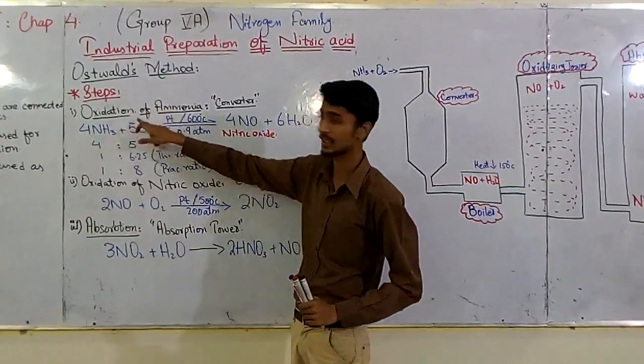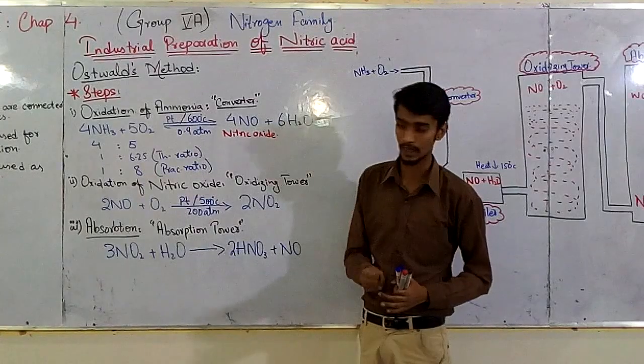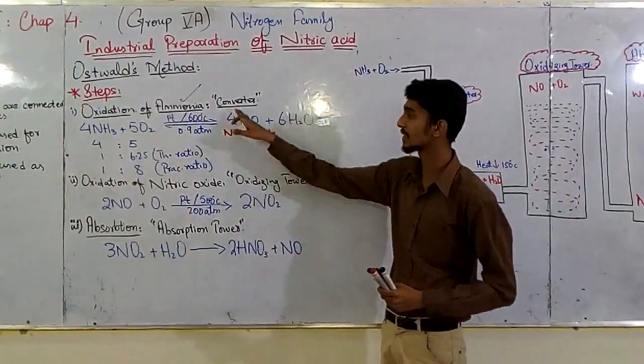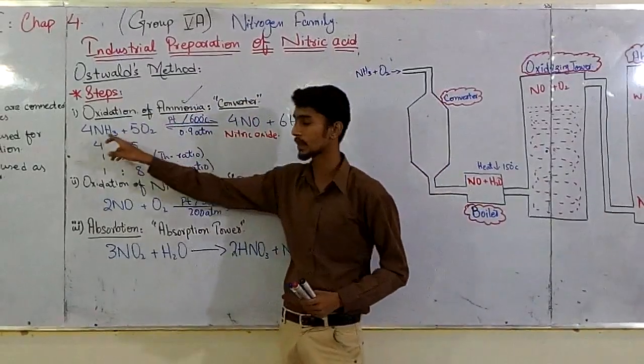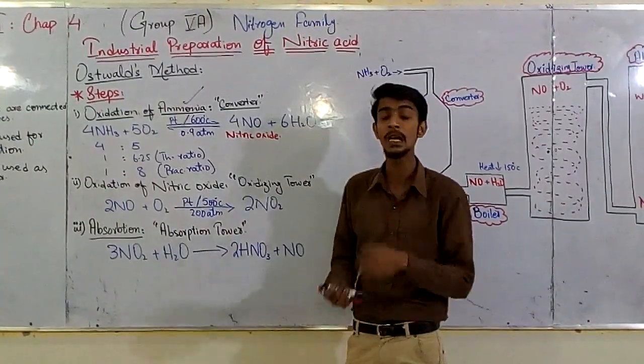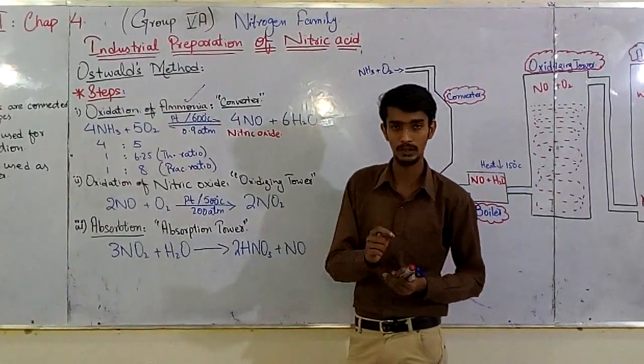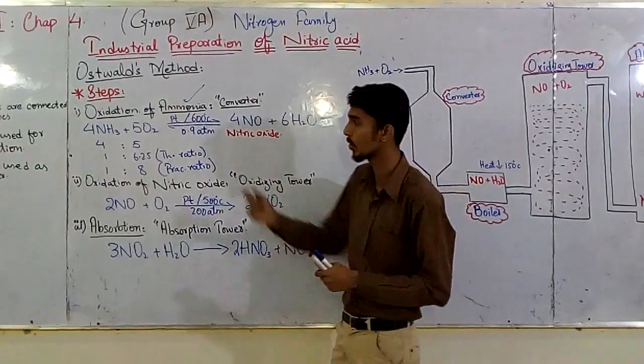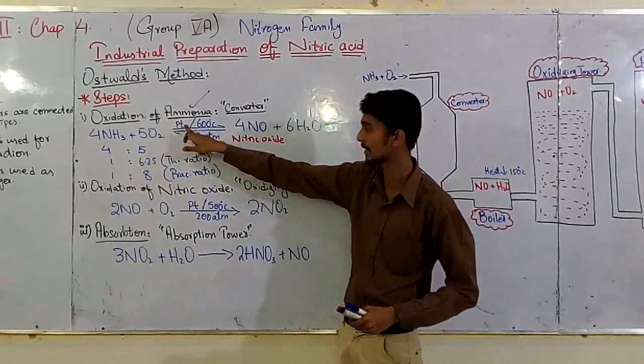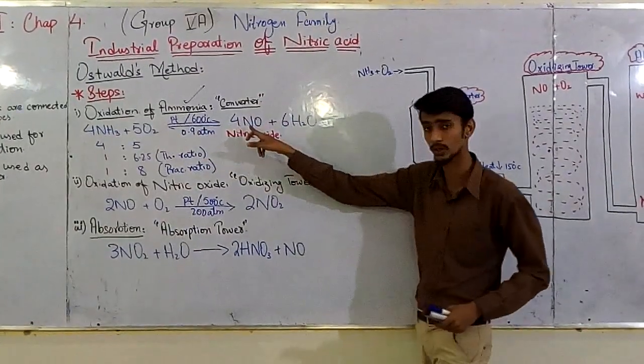The first step of nitric acid preparation is oxidation of ammonia. Oxidation means three definitions: addition of oxygen, removal of hydrogen, and removal of electrons. Ammonia reacts with oxygen in the presence of platinum catalyst at 6 to 8 atmospheres pressure and 900 to 1000 degrees Celsius. We will get nitric oxide and water.